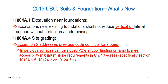Regarding site grading on 1804A.4, there's an exception two which addresses previous code conflicts for slopes. This relates to impervious surfaces that can be sloped less than 2% at the door landing or ramp to meet the accessibility maximum slope requirements covered in chapter 10 related to egress — specifically sections 1010A.1.5, 1012A.3, or 1012A.6.1. It's good that this has now been explicitly recognized and addressed in the code.